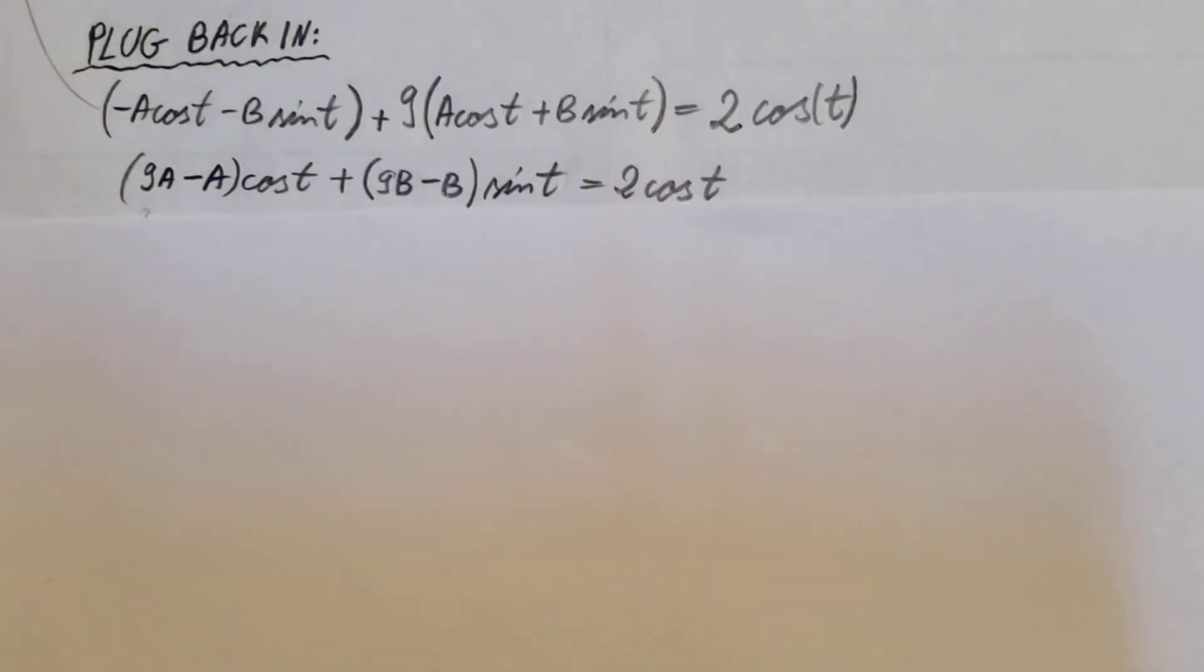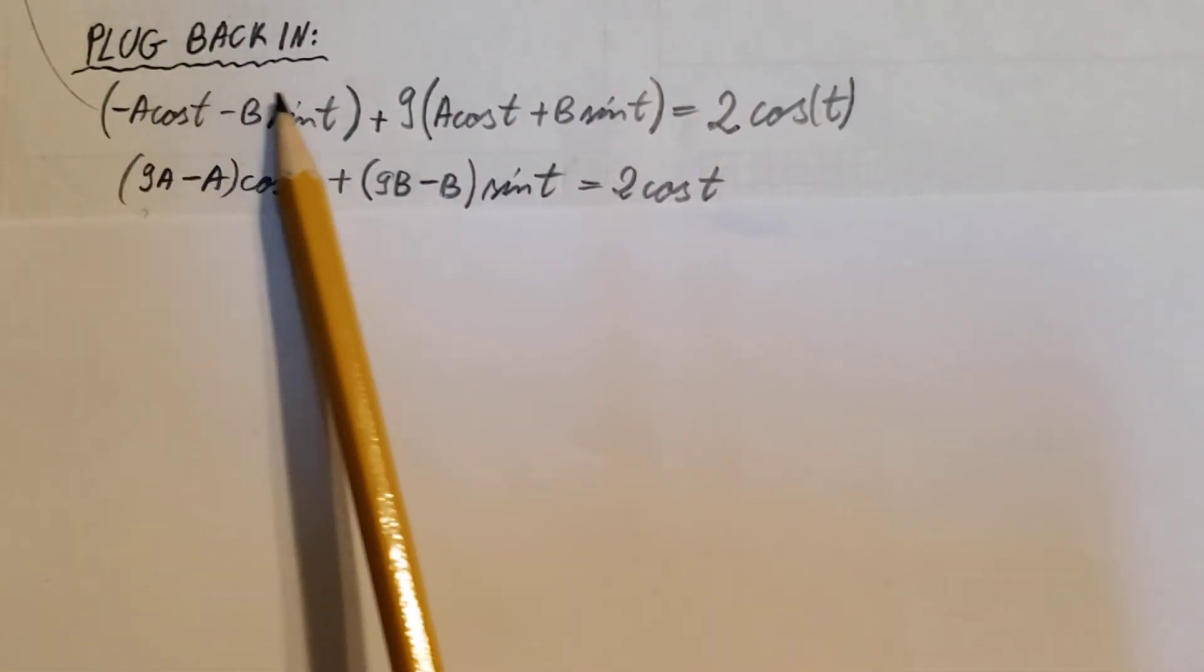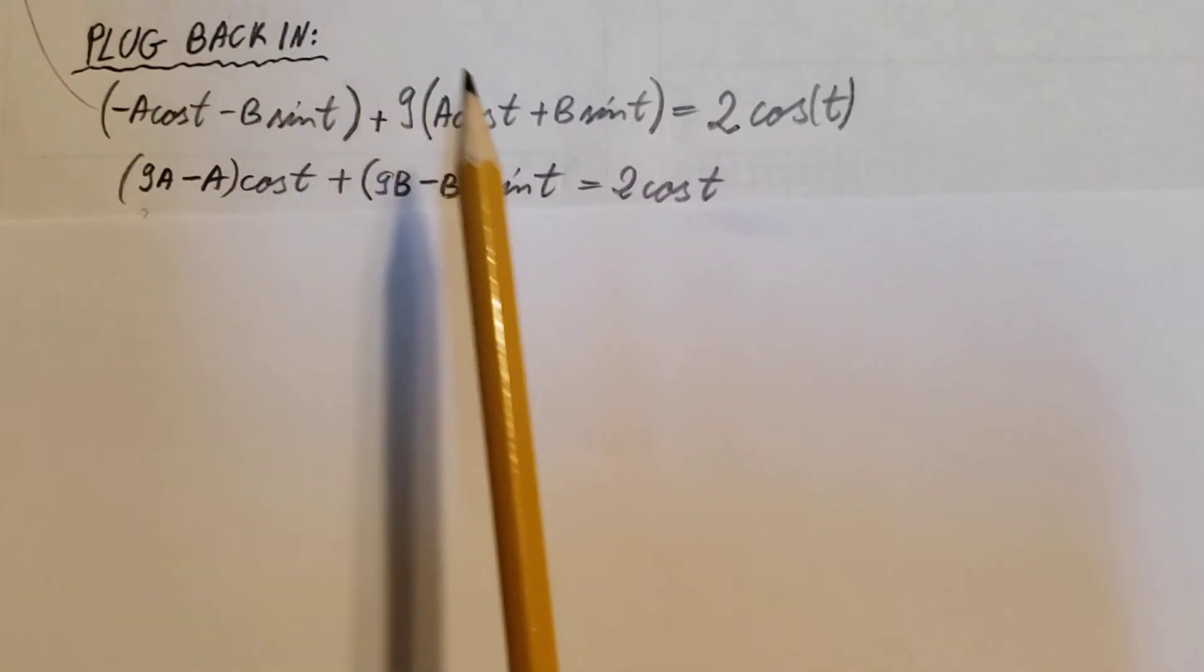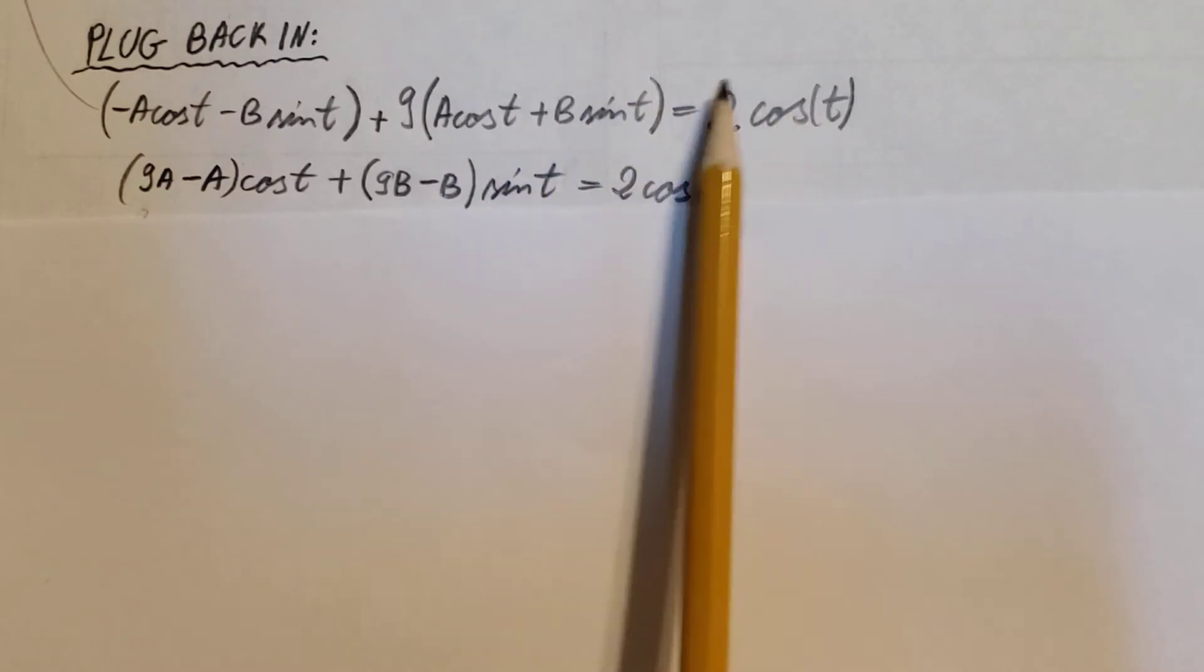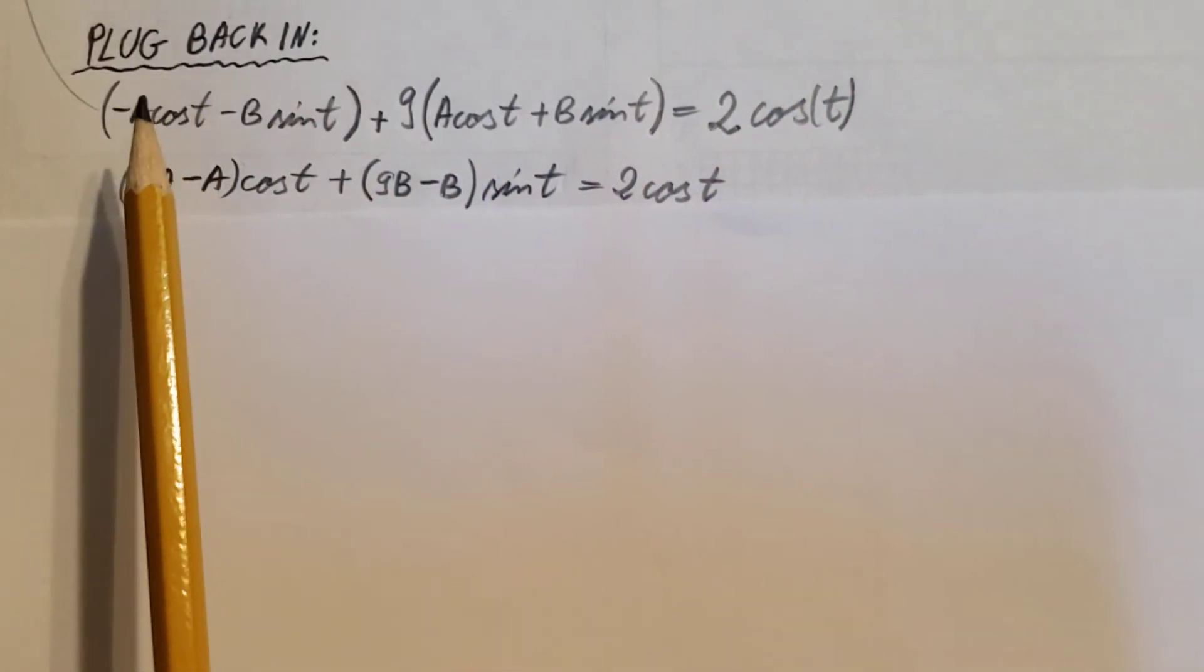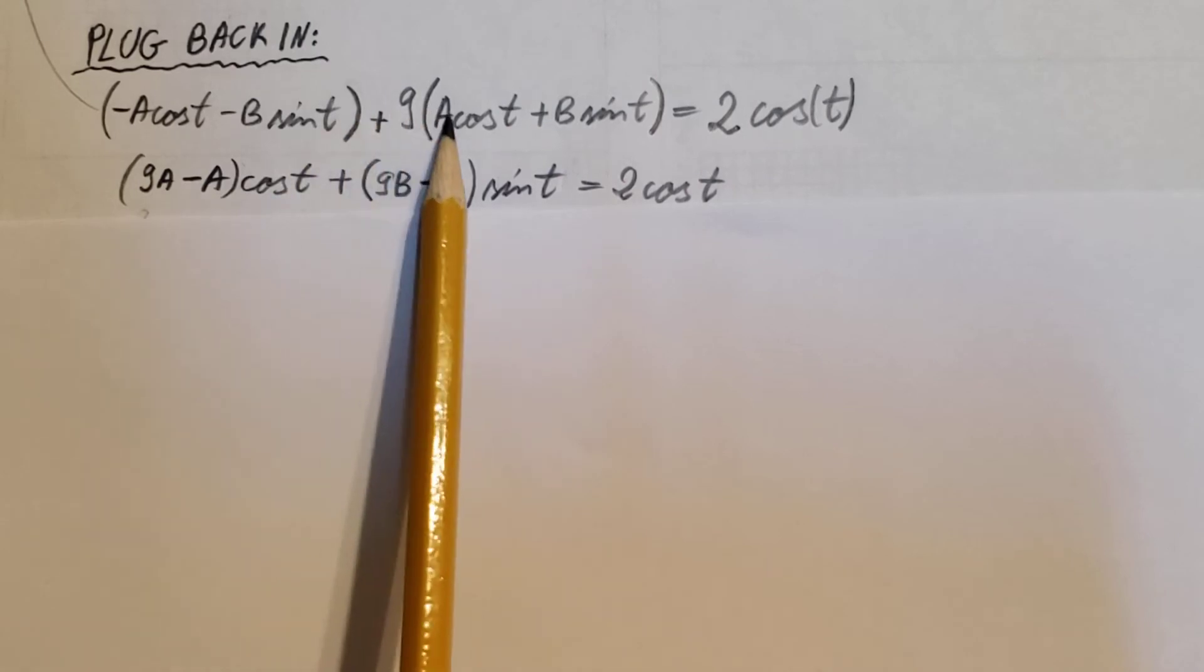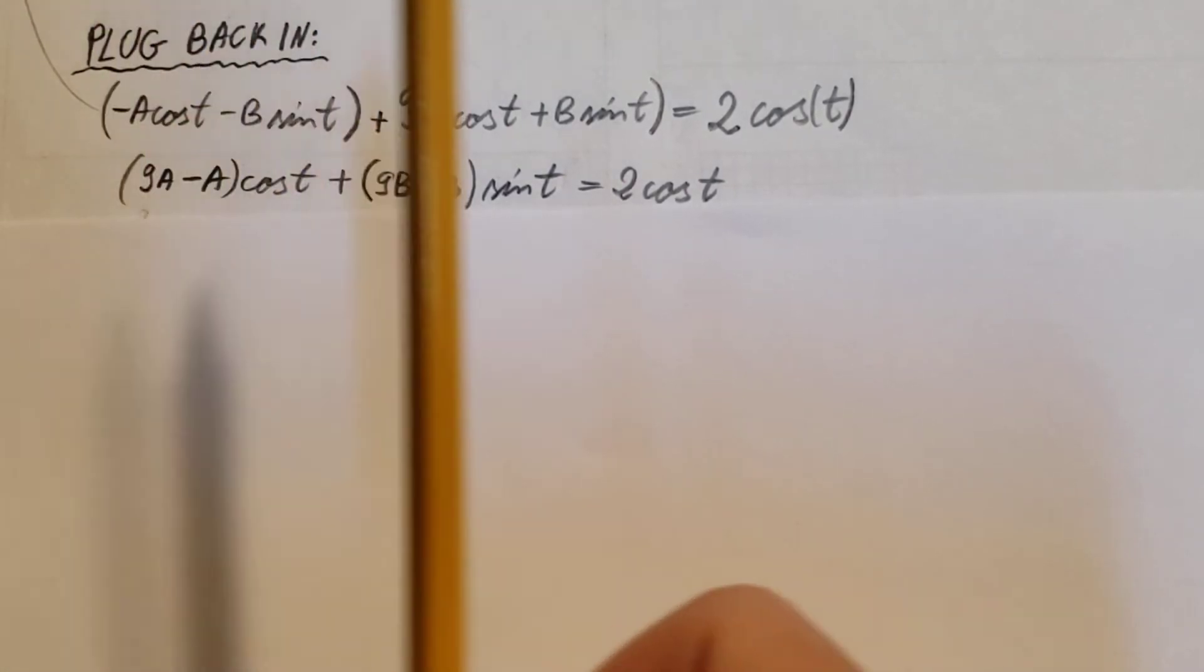Now let's collect the like terms. We have cosine and cosine, we have sine and sine. On the right-hand side, we're not doing anything. From this term and this term, I'm gonna factor out the cosine t, and the coefficients will be left behind: 9a minus a.